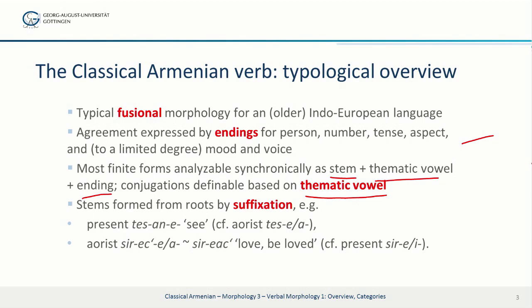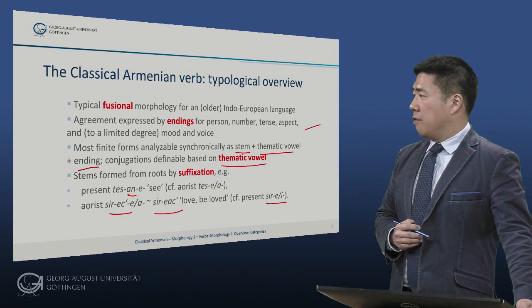Stems are formed from roots by suffixation in almost all cases. For example, we have the suffix -an- in the present stem tessane, compare aorist tesse or tessa, without the suffix. Conversely, we have the aorist sirets alternating with siryats, which shows a very important aorist-forming suffix. Compare the present seer without that suffix.